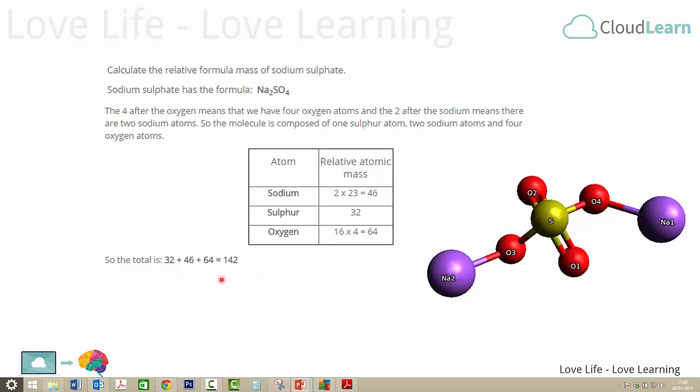Once again, we add them all up and we get an answer of 142. So 142 grams of sodium sulfate would be a mole of sodium sulfate. Thank you for listening.